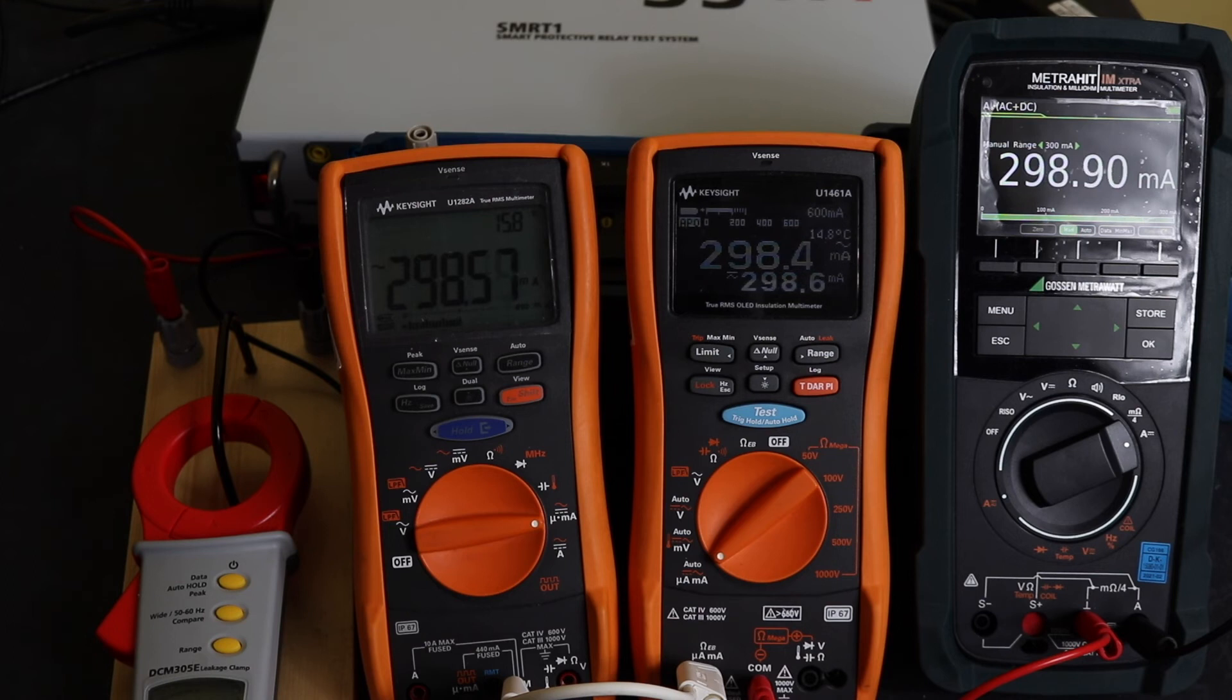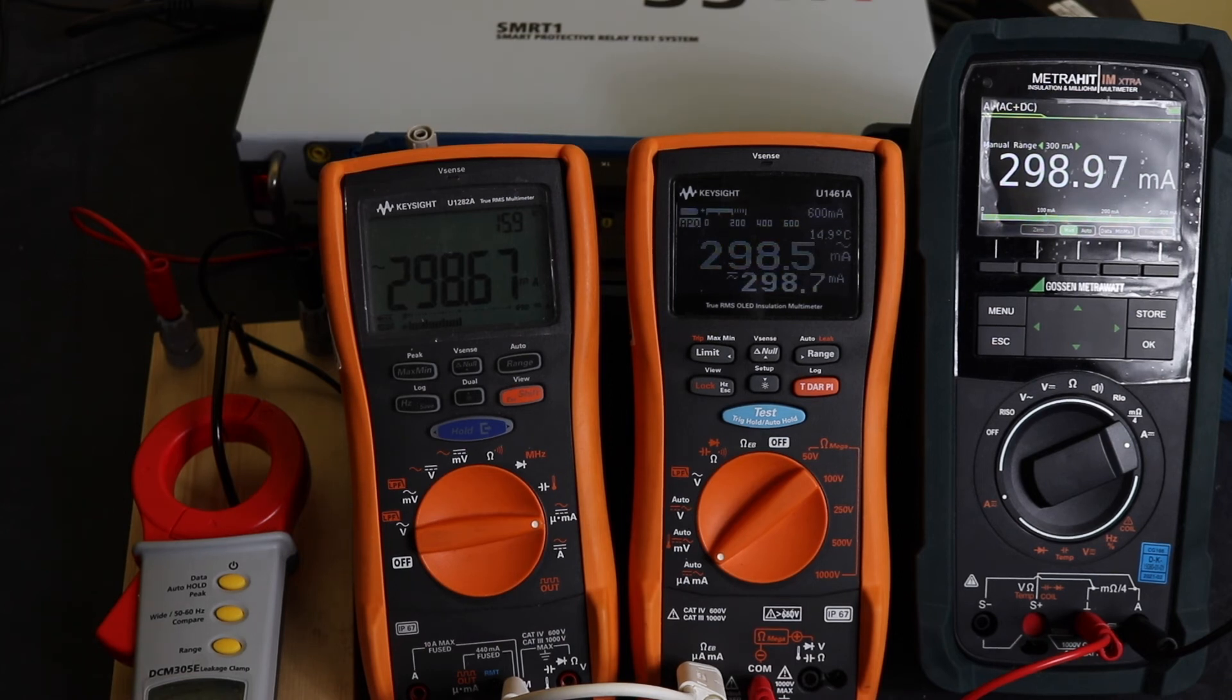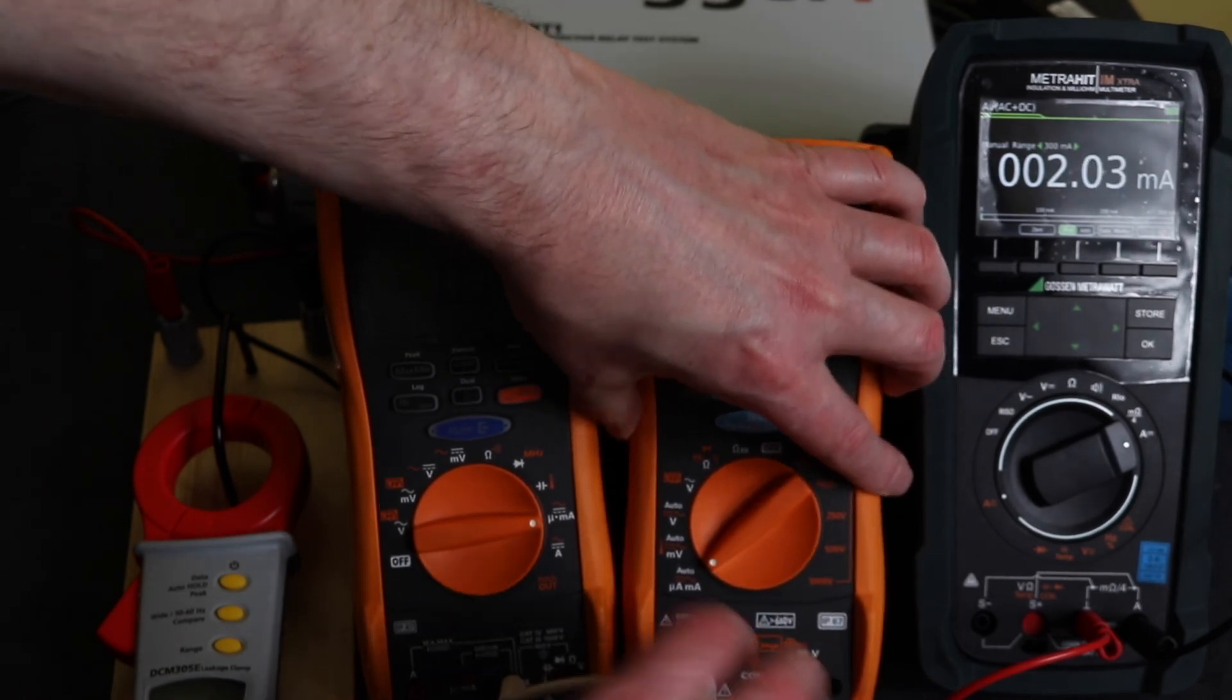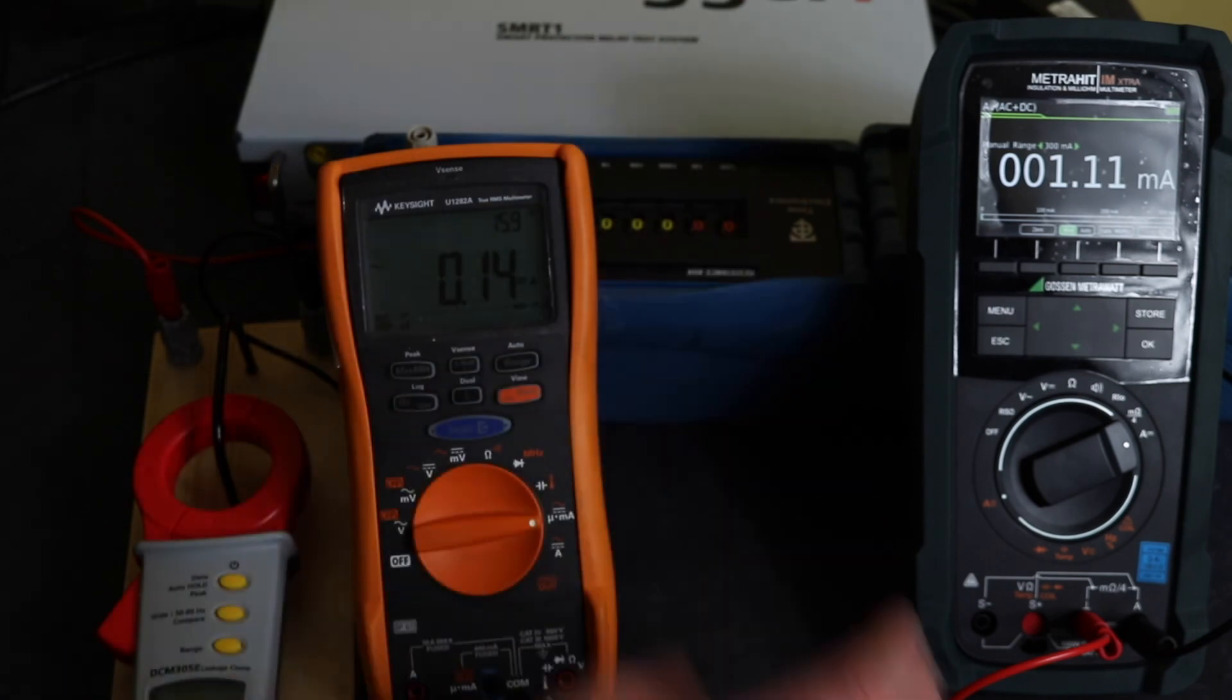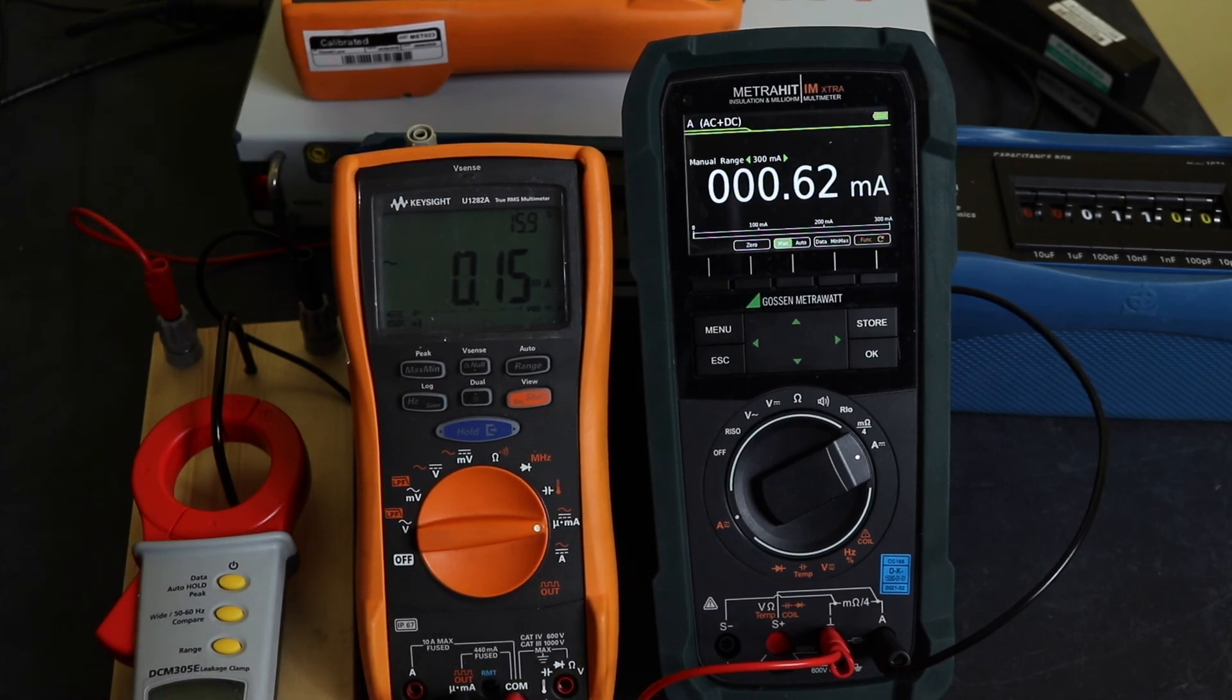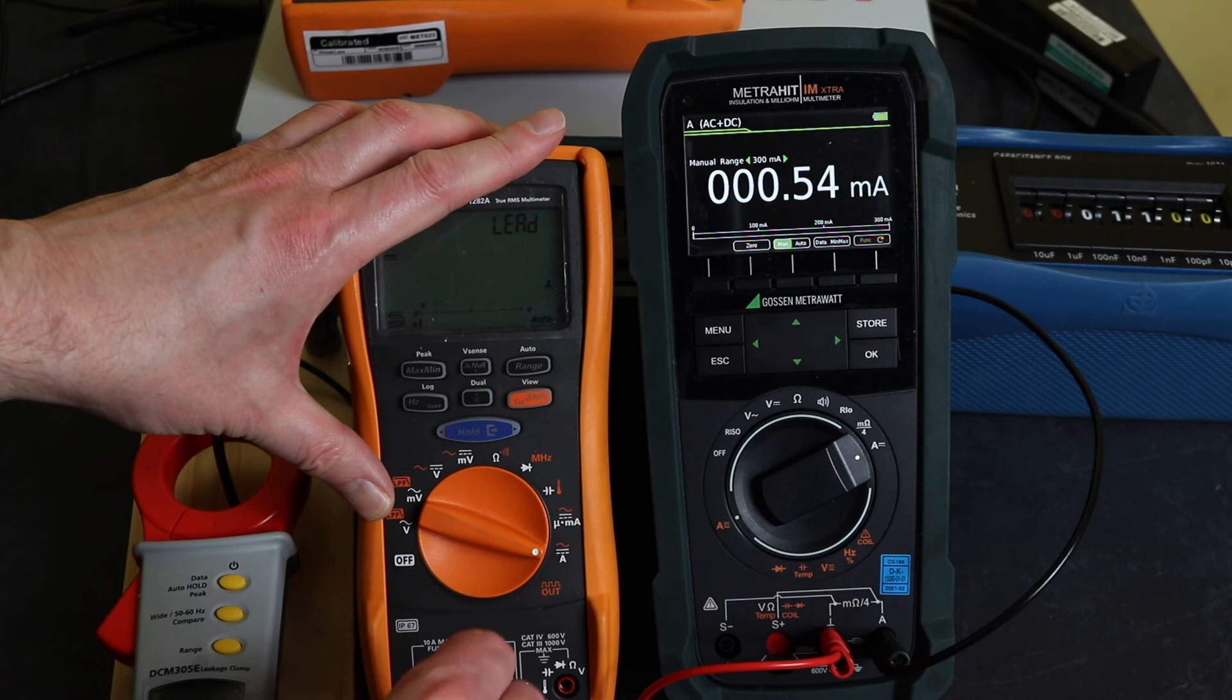So we've got to 300mA there. Unfortunately, what I've messed up with is the U1461A can't read above 400mA. So we could take that out of circuit and just use the MetroClip and the U1282A. Here's the other thing we can do. Shows a little bit out, doesn't it? We're reading 303.4 on the DCM305E. So let's just switch that off and we'll just take this one out of circuit and just move the MetroClip across, and then we can go up to 500mA then.